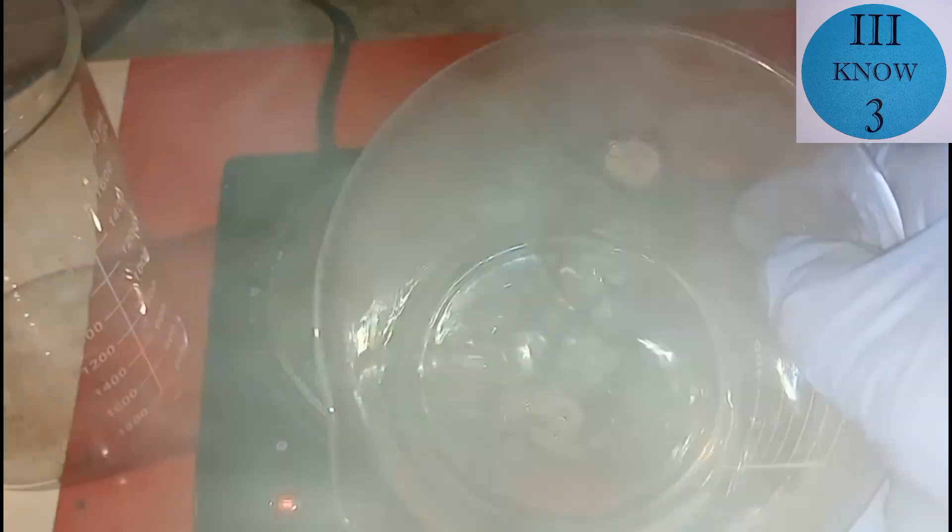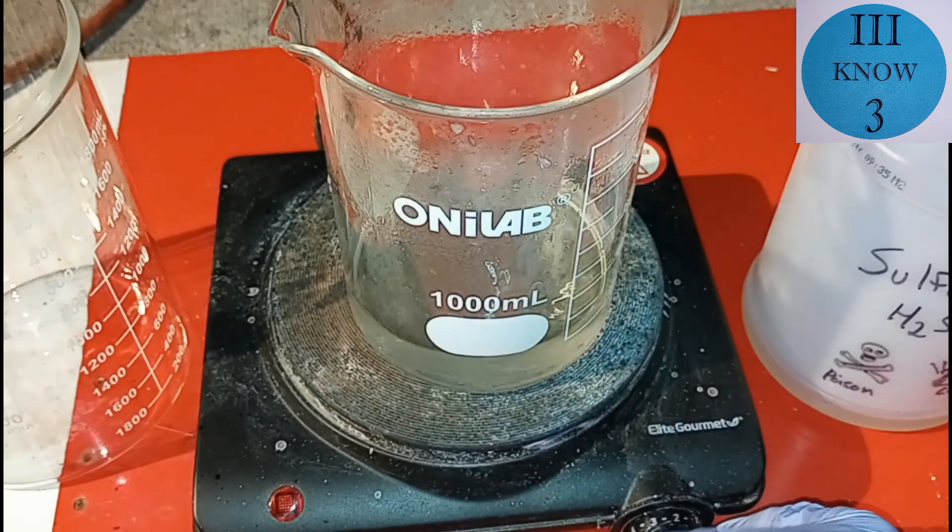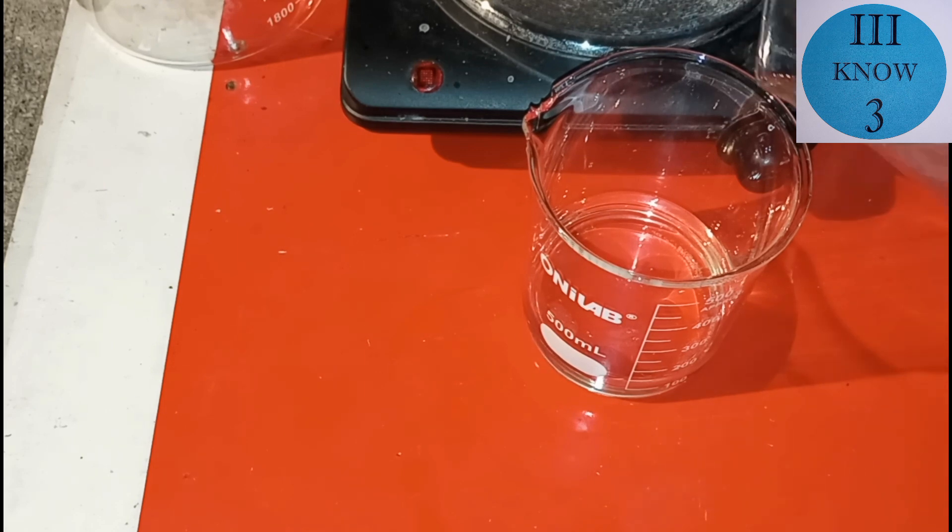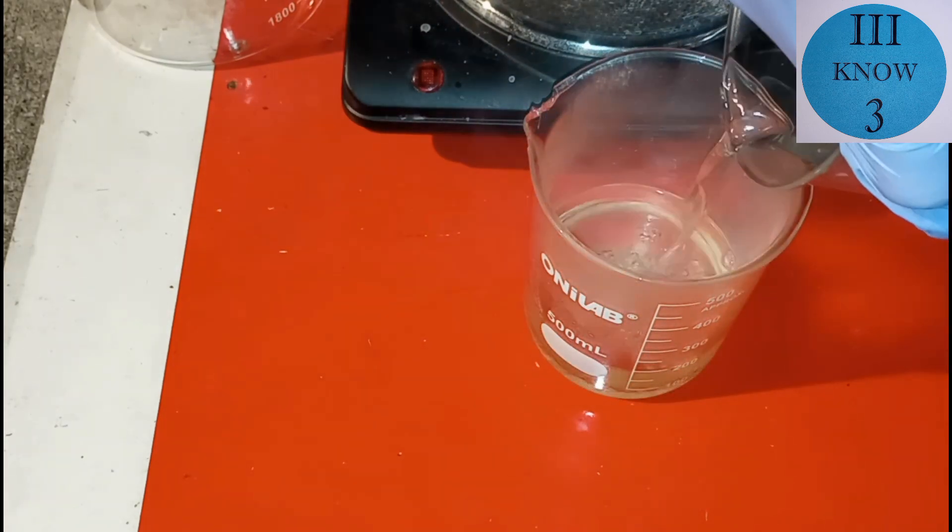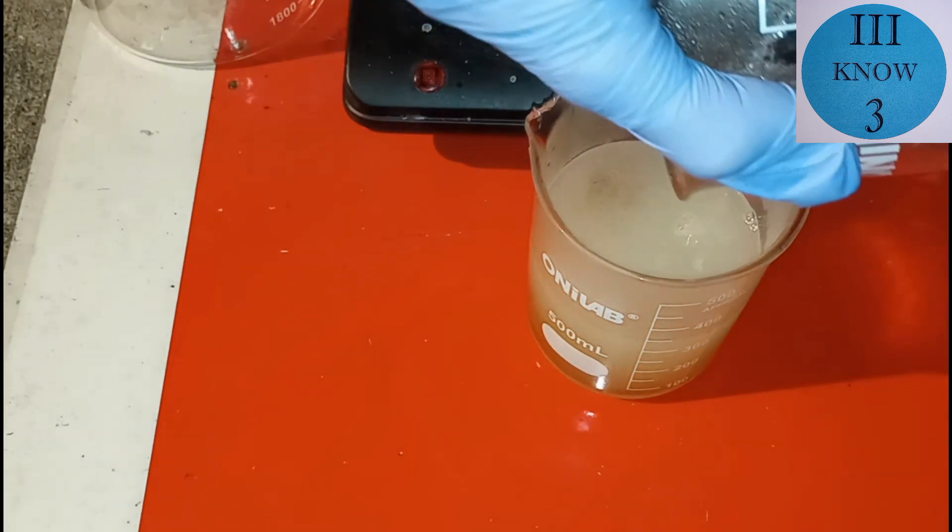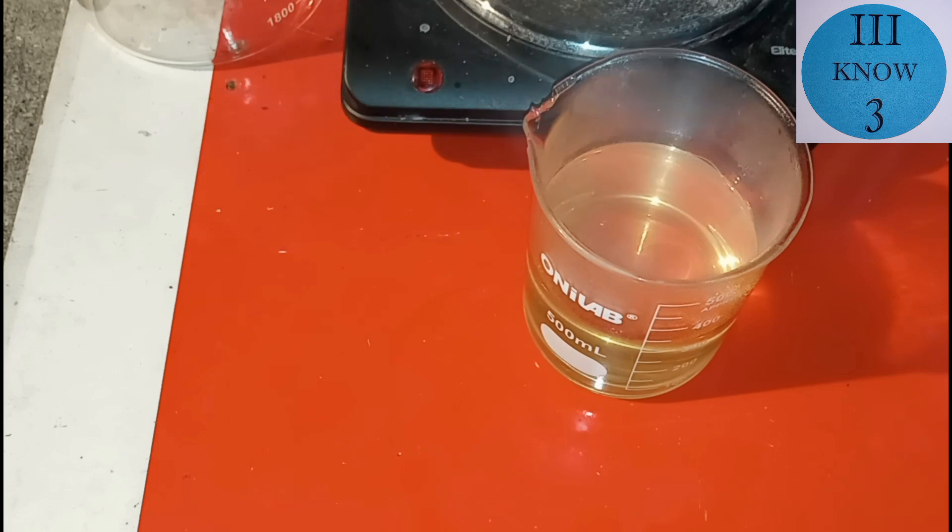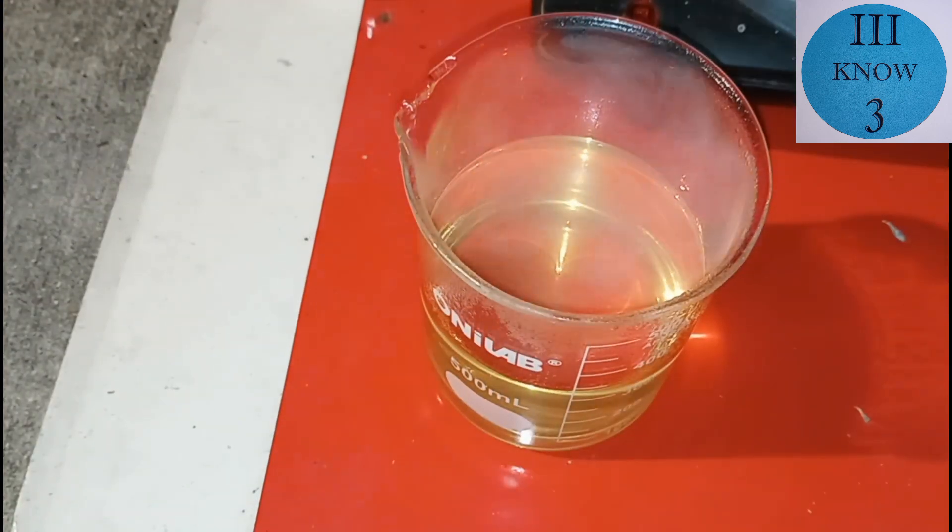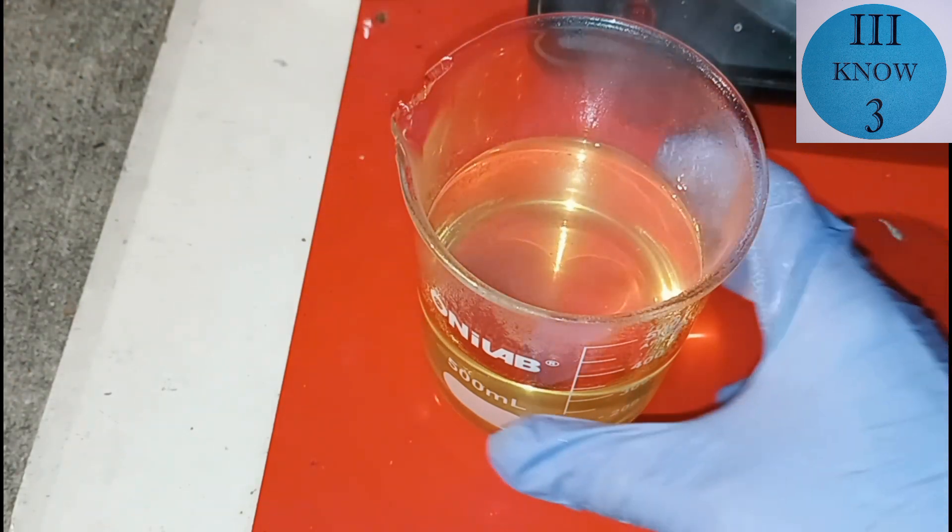It's just about dissolved, so here comes the part that's kind of fun and kind of scary at the same time. This solution is still pretty hot because we're just now turning it off. So carefully pour it into the sulfuric acid a little at a time, and make sure that you pour it into the sulfuric acid and not the other way around, because if you do it the other way around, there's a good chance that it could splash up and burn you. It was already warm from the hot plate, but pouring it into the sulfuric acid is actually an exothermic reaction, so it actually gets hotter just by pouring it into the sulfuric acid.